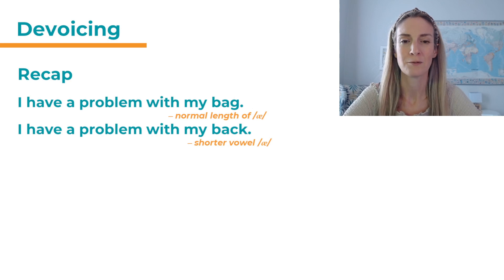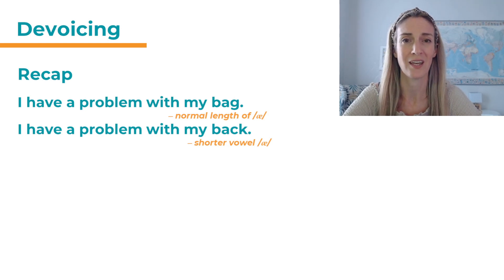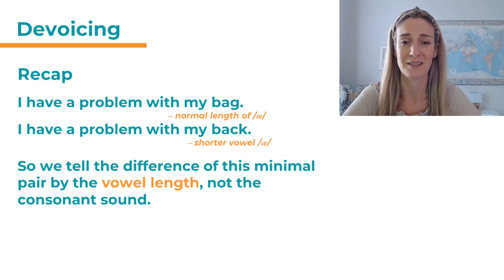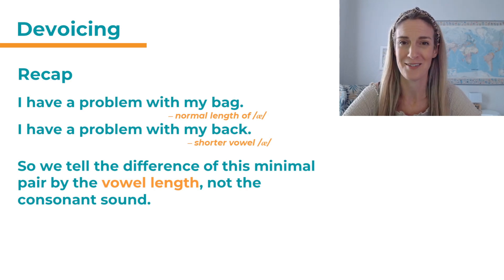So to recap: 'I have a problem with my bag.' 'I have a problem with my back.' In 'bag', in the first sentence, we have devoicing but it's the normal length of the vowel 'a'. And in the second sentence, we have an even shorter 'a' because of pre-fortis clipping. So if the 'g' in 'bag' is devoiced and the word becomes 'back', the vowel retains its original length. And so we tell the difference of this minimal pair by the vowel length, not by the consonant sound — because the consonant is not really different anymore. What is different is the vowel length.